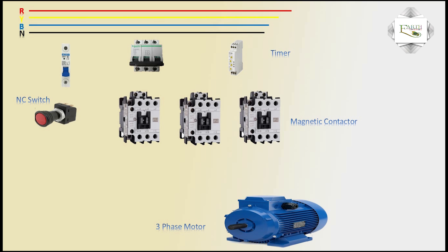Stop using NO switch, normally open switch. Motor is start using magnetic contactor star connection, magnetic contactor delta connection, magnetic contactor main connection. Three-phase TP line input and output connect to magnetic contactor.